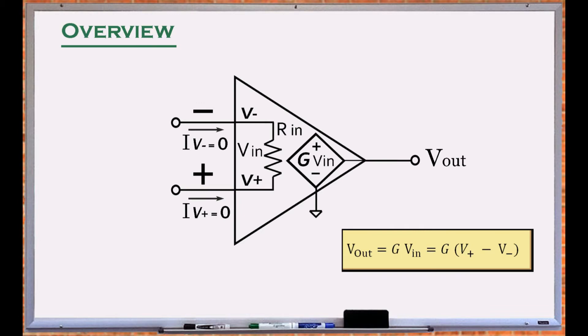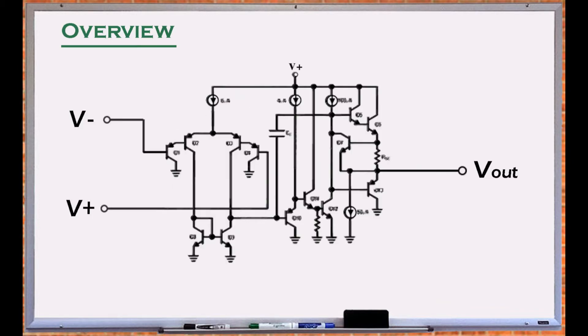An operational amplifier, referred to as op-amp, is a voltage amplifier having differential inputs. Amplifiers are made of transistors, resistors, and a few capacitors.